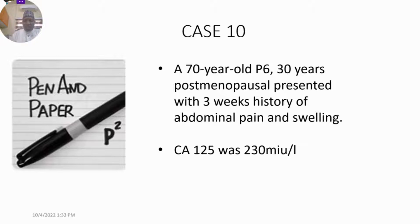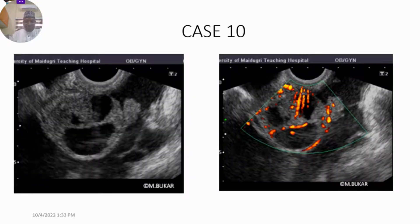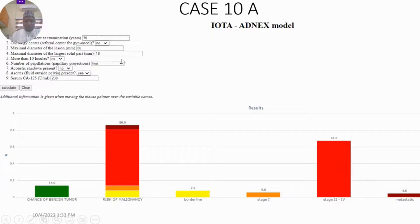Case 10 was a 70-year-old para 3 who was 30 years post-menopausal, presenting with a 3-week history of abdominal pain and swelling. Her CA-125 was 230. We inputted this information twice — first with CA-125 and second without CA-125. With CA-125, the highest risk was for stage 2 to 4 at 67.6%. Without CA-125 the value dropped, demonstrating the importance of CA-125: with it the AUC is 0.94, without it 0.93.